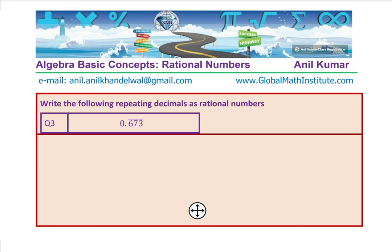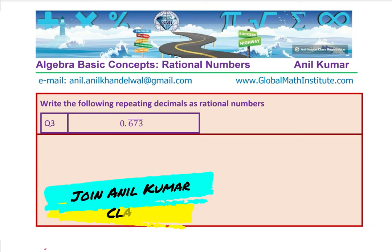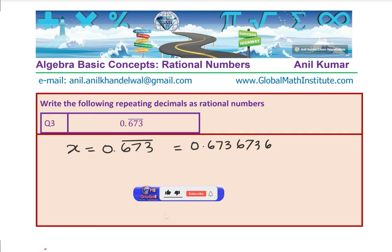Here is question number 3. The additional information here is three digits after the decimal which are repeating. This time I have 0.673 repeating. Can you pause the video and answer this question? Let's look into this solution. We have x equals 0.673 repeating, which basically means 0.673673673 repeating. That is the way of writing. The bar on the top means this set of numbers repeats.